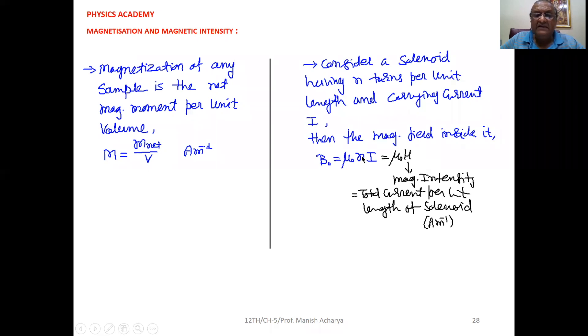Now, N, that is number of turns per unit length. I, that is current through each turn. So, N into I will give you total current per unit length of the solenoid and that is magnetic intensity. So, its unit will be also ampere per meter.